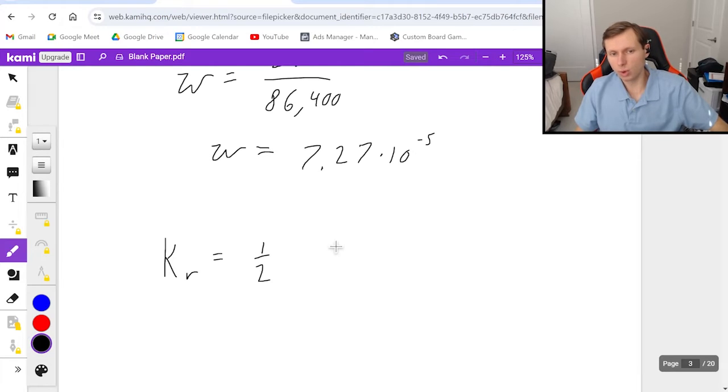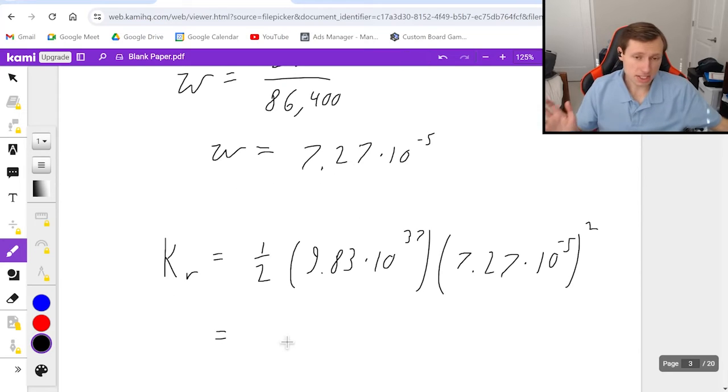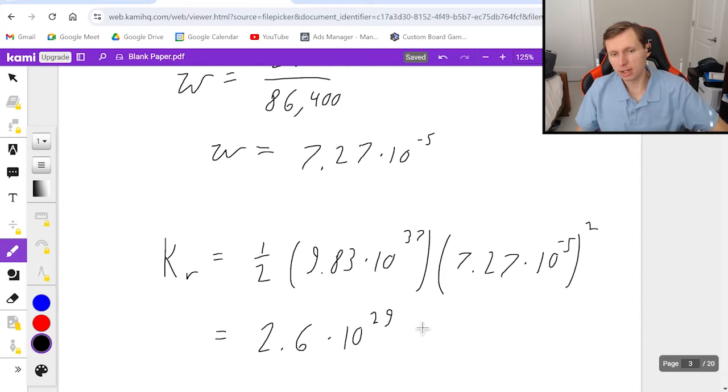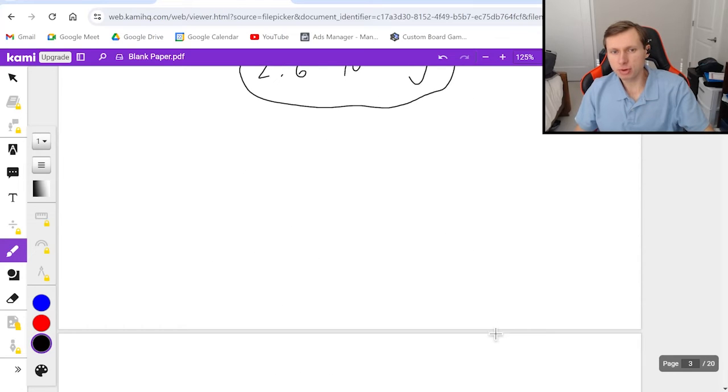And so now all we got to do is plug into the final equation. Kr equals one half I omega squared. I we said was 9.83 times 10 to the 37th power, ridiculously big number, and then times 7.27 times 10 to the minus fifth, and that is going to be squared. So plugging this in a calculator, this will give me my final answer. We'll get about 2.6 times 10 to the 29th power, and the units are joules. That's how much energy it just takes for the earth to spin. We're not even counting the amount of energy it takes to move around the sun. But regardless, this is a ginormous number. So that's it for the first example.